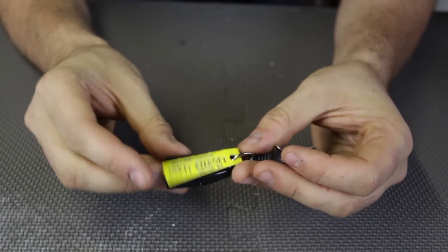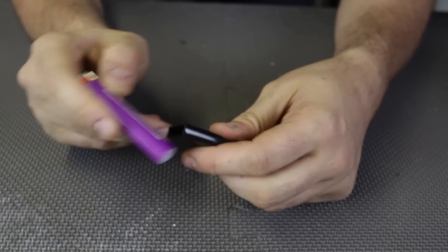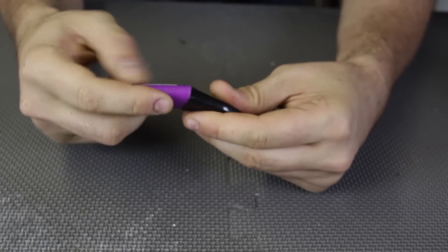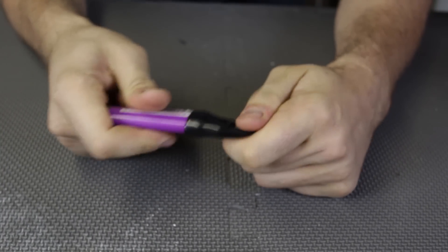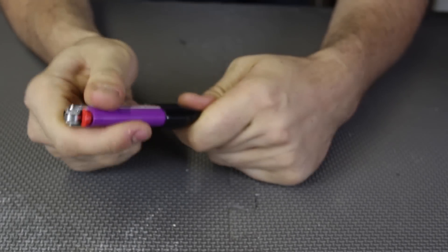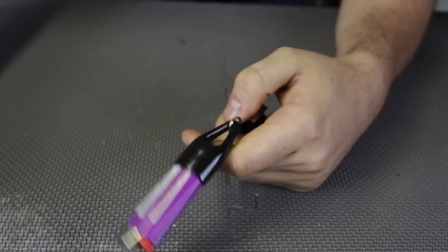For the next gadget, we got here a lighter leash. What it is, we can put this lighter right in here. It's a little pocket. Very tight fit. That's what we want, that way we don't lose it. Let's demonstrate. Let's say I put it on my pocket right here.